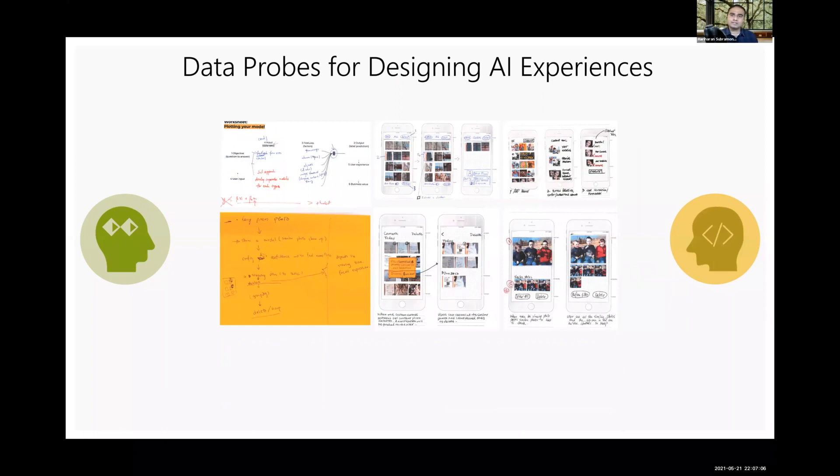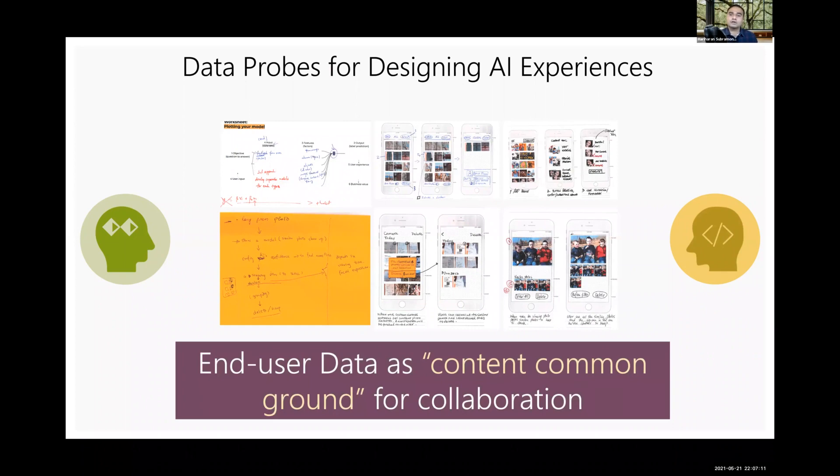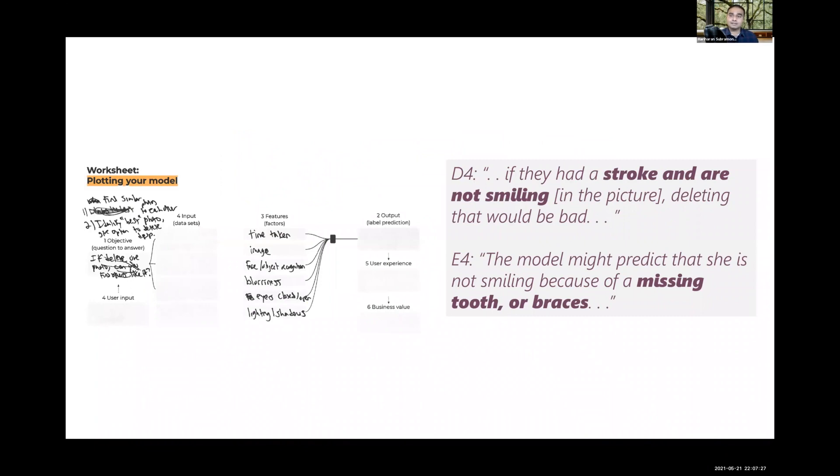Across all sessions, the designers and engineers used individual data points as content common ground for collaboration. Using data probes, the designers advocated for end-users when specifying model details and simultaneously evaluated different assumptions by considering diverse data. For example, when designing smile detection as a potential solution for decluttering photos, the designer pushed back that if a person had a stroke and could not smile, then deleting that picture would be wrong. By acknowledging this concern, the engineer added that models could be error-prone, especially in instances of missing teeth or braces.